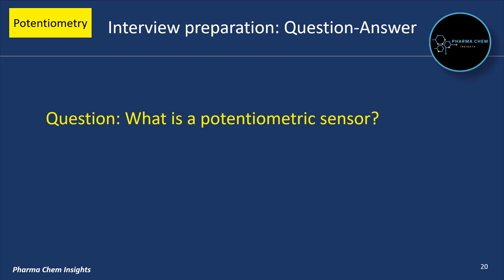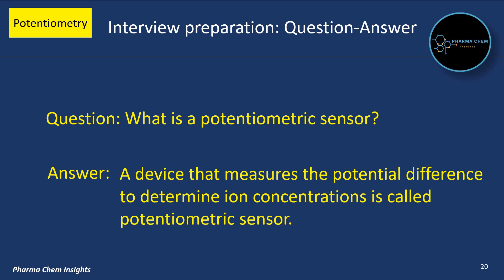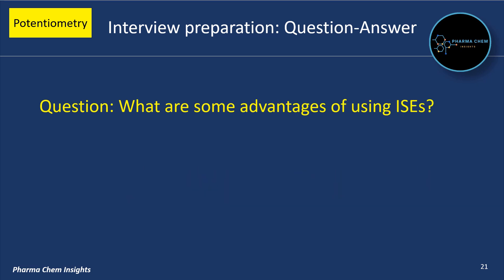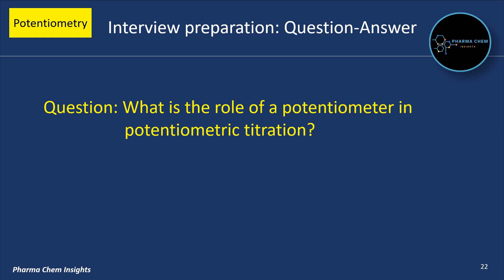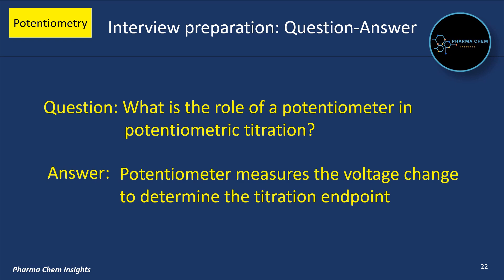What is a potentiometric sensor? A device that measures the potential difference to determine ion concentrations is called a potentiometric sensor. What are some advantages of using ion selective electrodes? Advantages include high selectivity, fast response, and the ability to measure low ion concentrations. What is the role of a potentiometer in potentiometric titration? The potentiometer measures the voltage change to determine the titration endpoint.